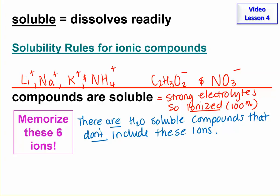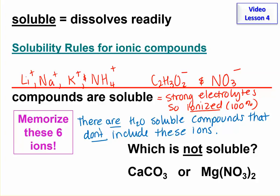For example, we need to be able to answer a question like this: if I tell you that one of these compounds is not soluble, can you tell me which one is not soluble? We know that this one must be soluble because it has the nitrate ion. So I know the one that is not soluble is this one — this is the not-soluble one.